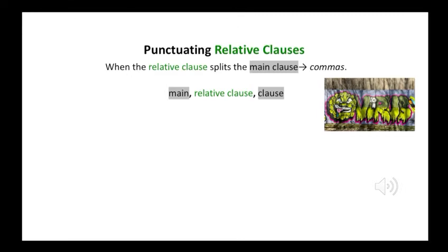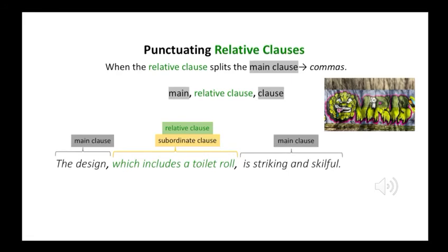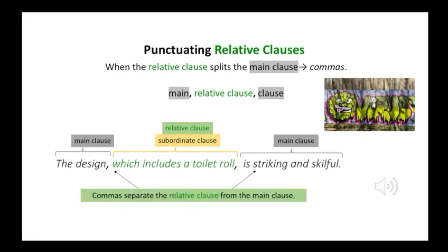When the relative clause splits the main clause, we use commas. So the structure is: main clause — relative clause — clause. For example: 'The design, which includes a toilet roll, is striking and skilful.' You can see that the relative clause is splitting the main clause, and the commas help to separate this.